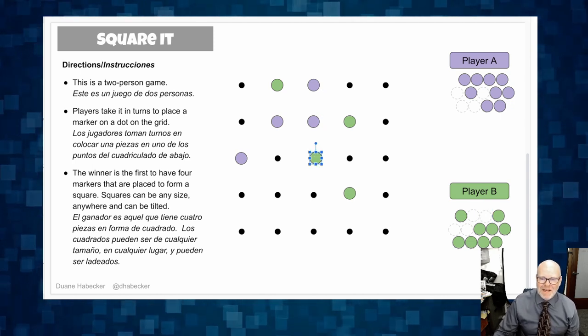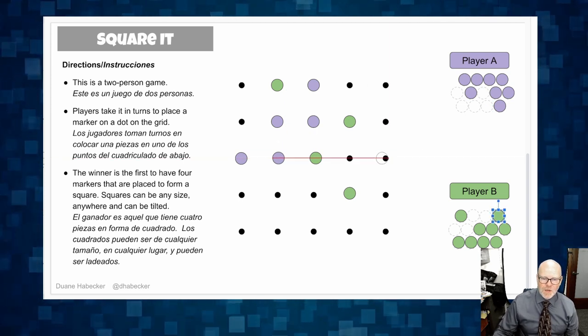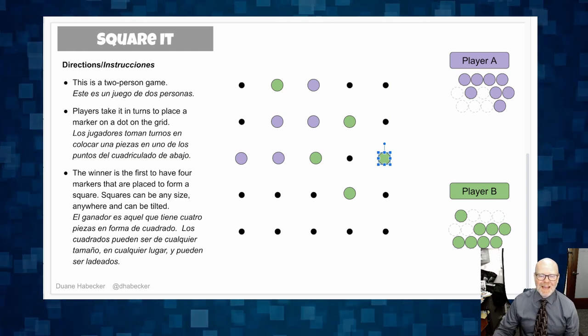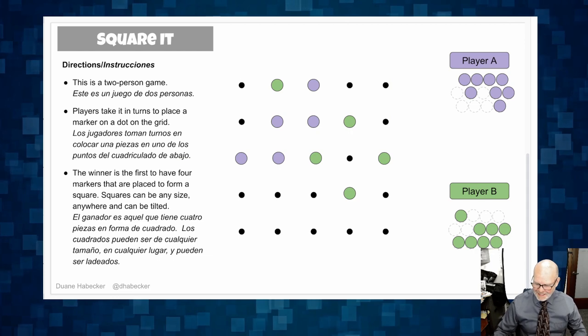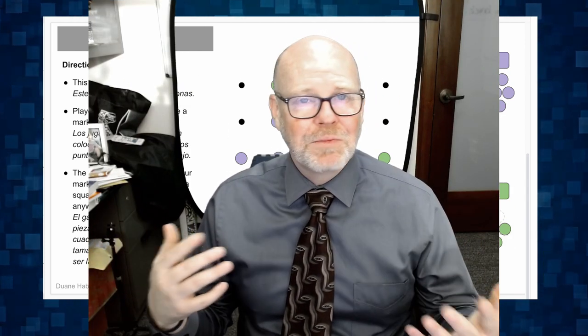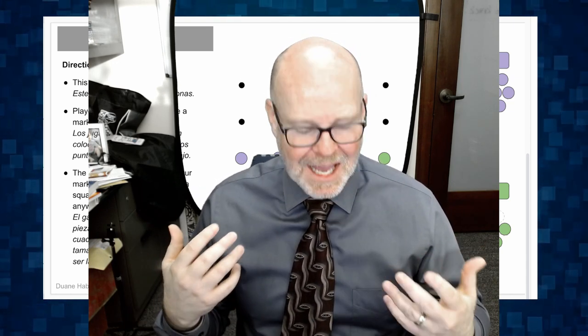And then player A goes and let's kind of end this because you get the idea. And then player B goes and woohoo, player B has a square and the game is over. And that is how you play the game. It's super simple: two player game back and forth. Whoever makes a square first wins the game.